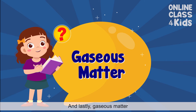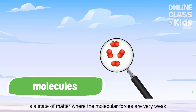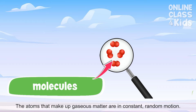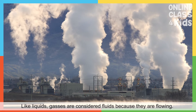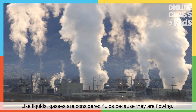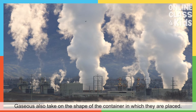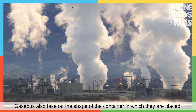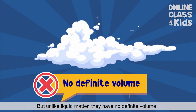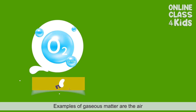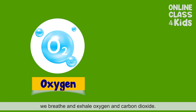Gaseous matter is a state of matter where the molecular forces are very weak. The atoms that make up gaseous matter are in constant, random motion. Like liquids, gases are considered fluids because they are flowing. Gases also take on the shape of the container in which they are placed. But unlike liquid matter, they have no definite volume. Examples of gaseous matter are the air we breathe and exhale — oxygen and carbon dioxide.